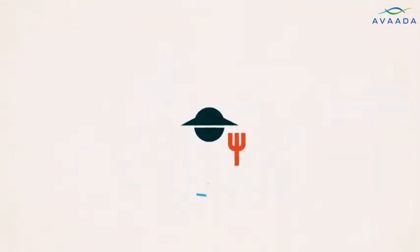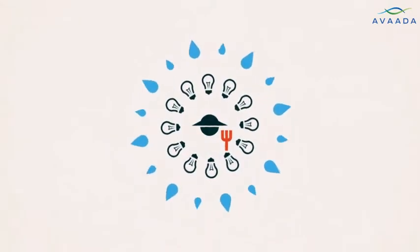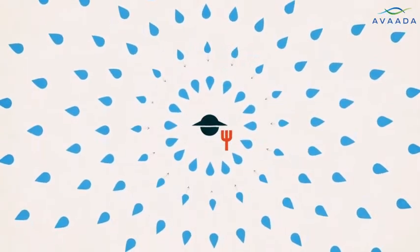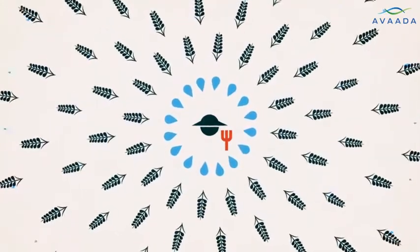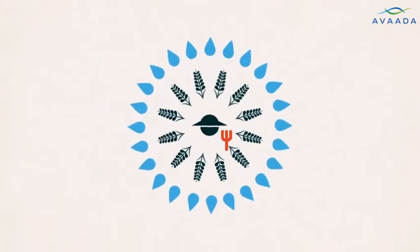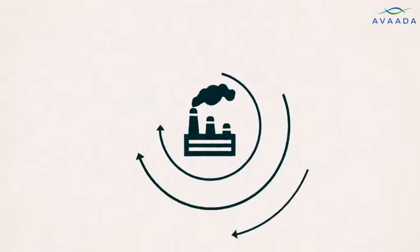Farmers are already finding ingenious ways to reduce their impact, like using special irrigation techniques to grow more crop per drop, and breeding new crops that are less thirsty. Other industries are following suit, adopting production processes that reuse and recycle water.